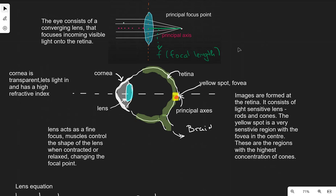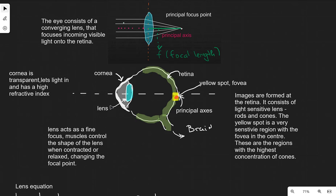We've talked about lenses — how does that relate to medical physics? The eye essentially acts like a lens; the cornea and the lens together do the focusing. The cornea is transparent, like a window, and has a high refractive index. The lens acts like a fine focus and muscles can control its shape — it can contract or elongate — which changes the focal point.